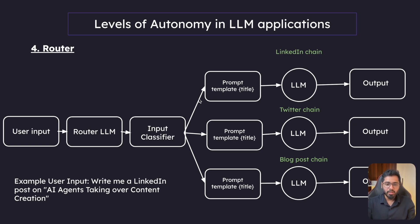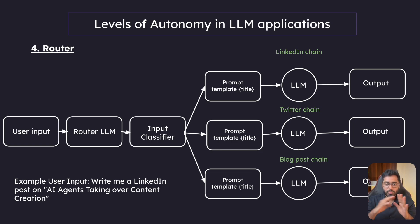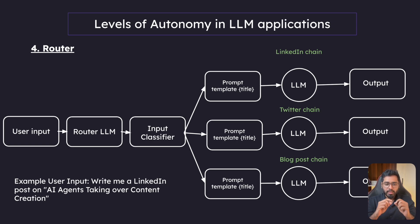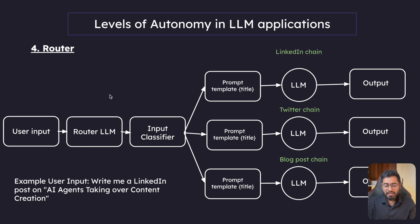The key difference from chains is that in chains there is no real intelligence or decision-making — the direction is predefined by the human. But in a router, the router LLM is actually making a decision based on the user input. It looks at the input, determines that LinkedIn is what the user wants, and directs the control flow to that particular chain.